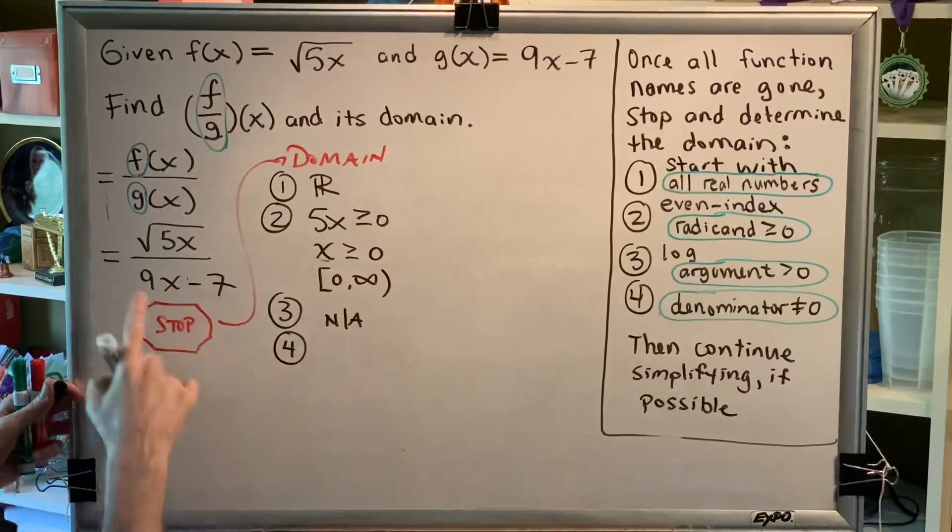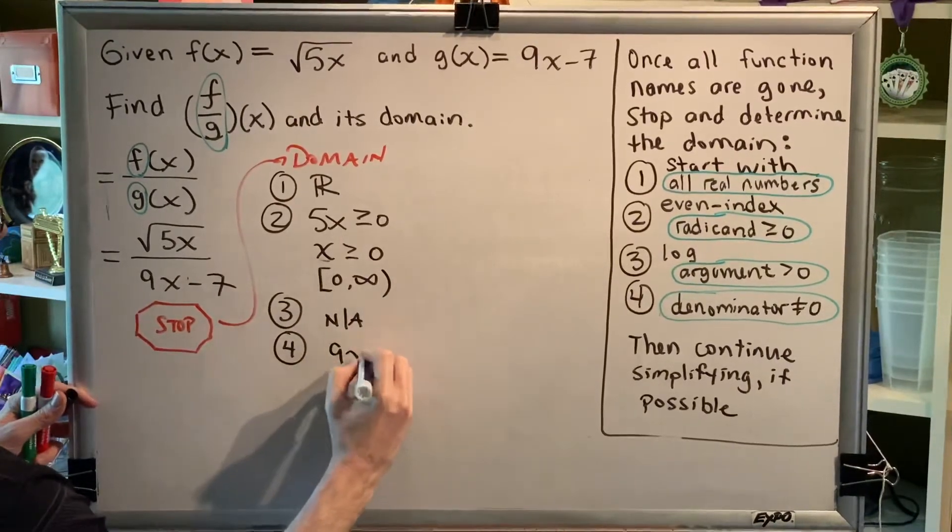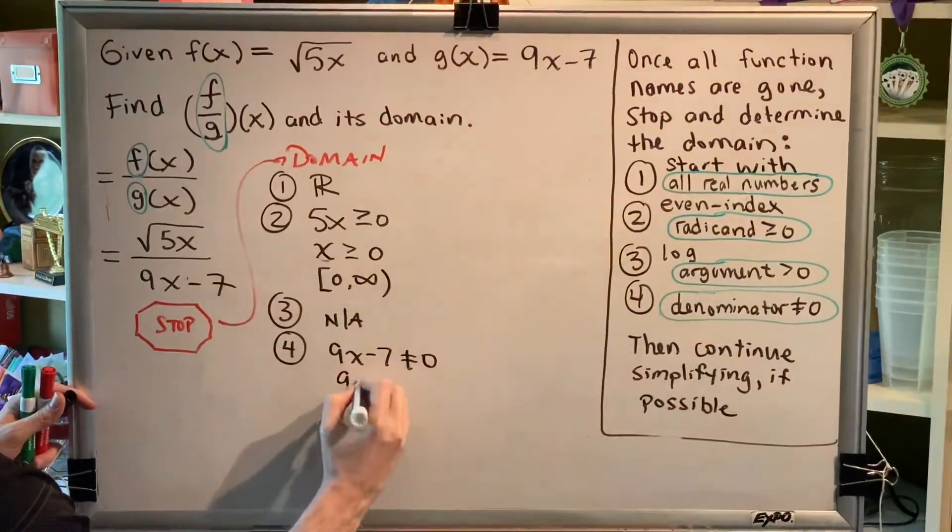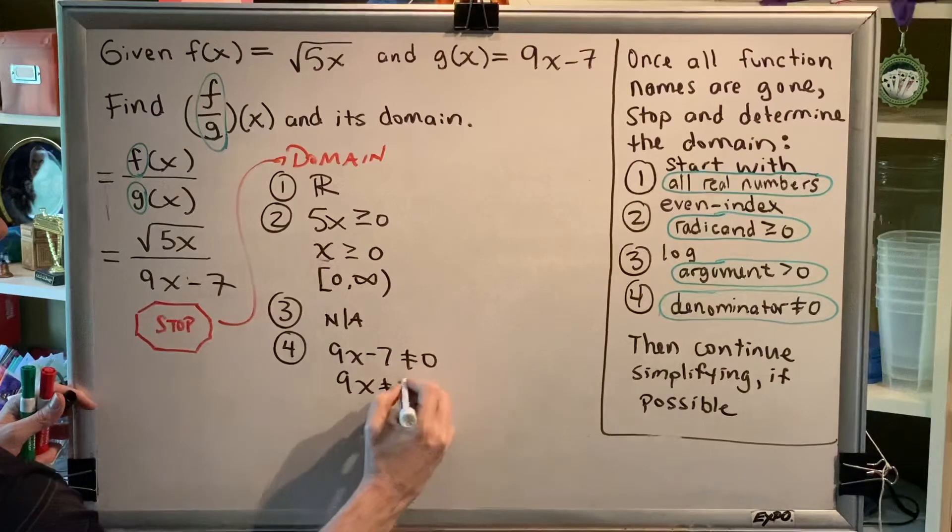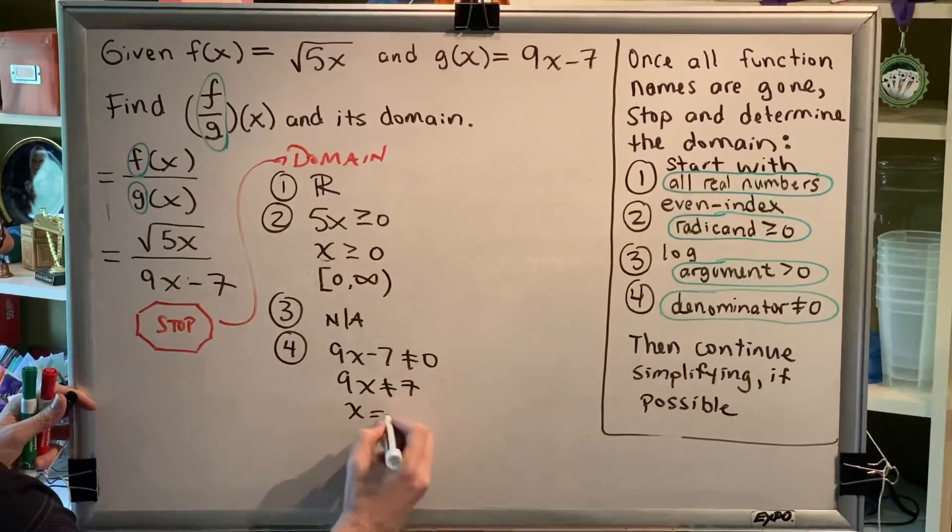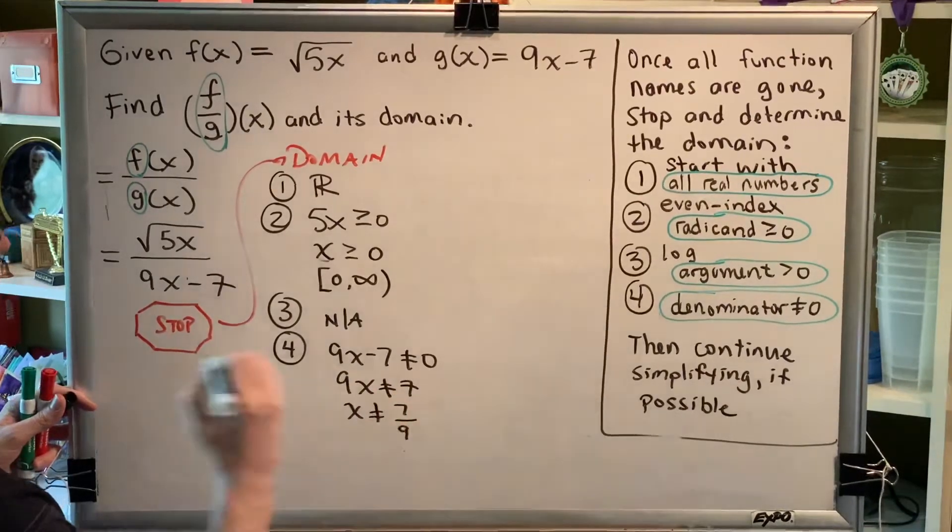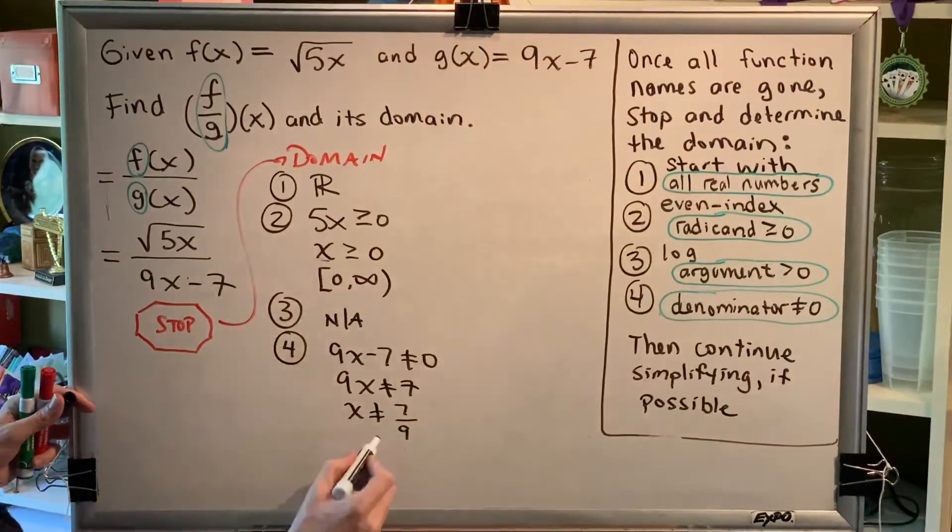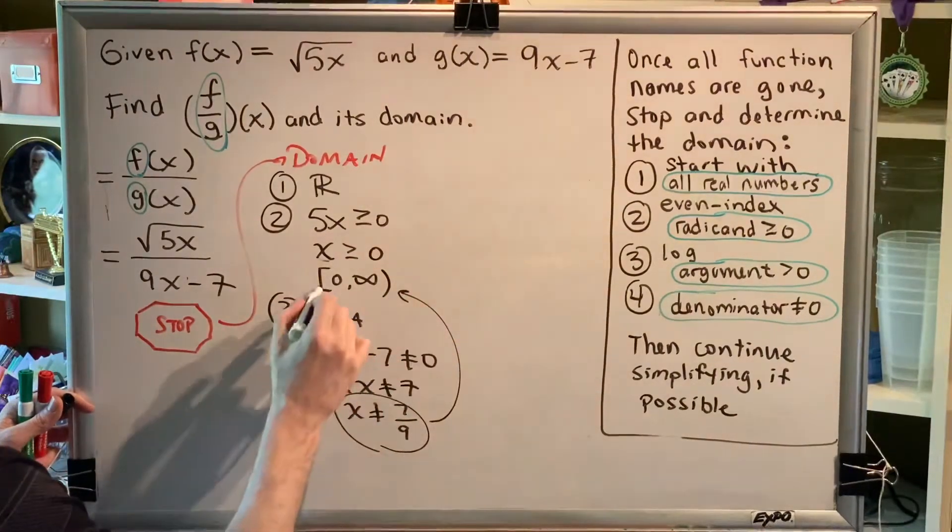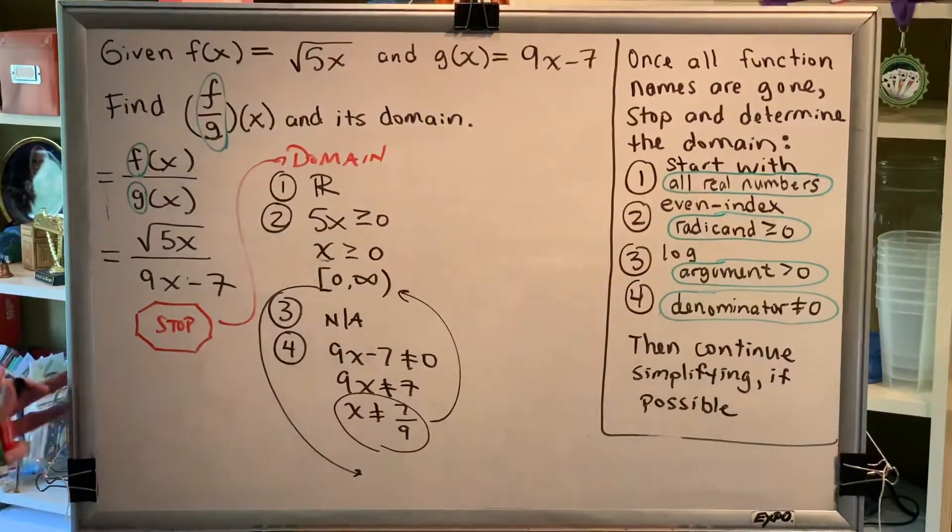I do have a denominator. So 9x minus seven is not allowed to be zero. Adding seven to both sides, 9x is not allowed to be seven. Dividing by nine on both sides, x is not allowed to be seven ninths. So I have to remove the number seven ninths from this collection of numbers to create my final answer for the domain.